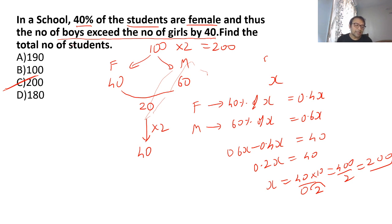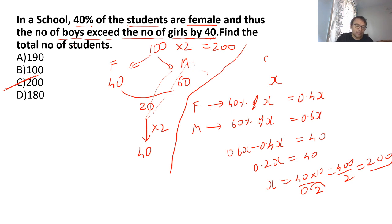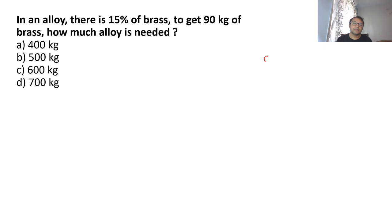Either way you solve it you should get 200 as the answer. The reason I normally avoid using x is because writing takes a lot of time compared to solving mentally. It's important that you can do as many sums mentally as possible — that is what will help improve your speed and accuracy. Write as little as possible when solving sums.